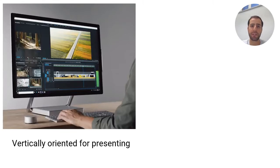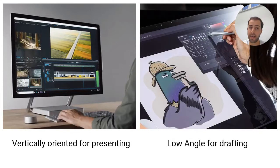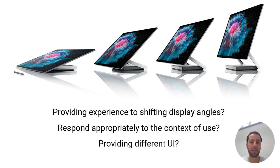Looking at how people use their digital drawing display: a vertical monitor affords reading a document but not inking on it with a stylus. It also allows reviewing a document, showing it to colleagues, or presenting refined ideas to others. By contrast, angled drafting tables allow close engagement with the content, enabling markup, annotations, and inking with a stylus. Yet none of these devices offer a user experience that senses and responds to shifted display angles — a lost opportunity to respond to context of use and provide several UI modes based on context.